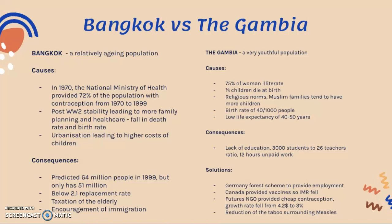Bangkok is also below its 2.1 replacement rate — the number of children needed to replace their parents in society. There is also more taxation of the elderly due to larger elderly populations, a potentially smaller workforce, and encouragement of immigration to fill employment gaps in the economy.